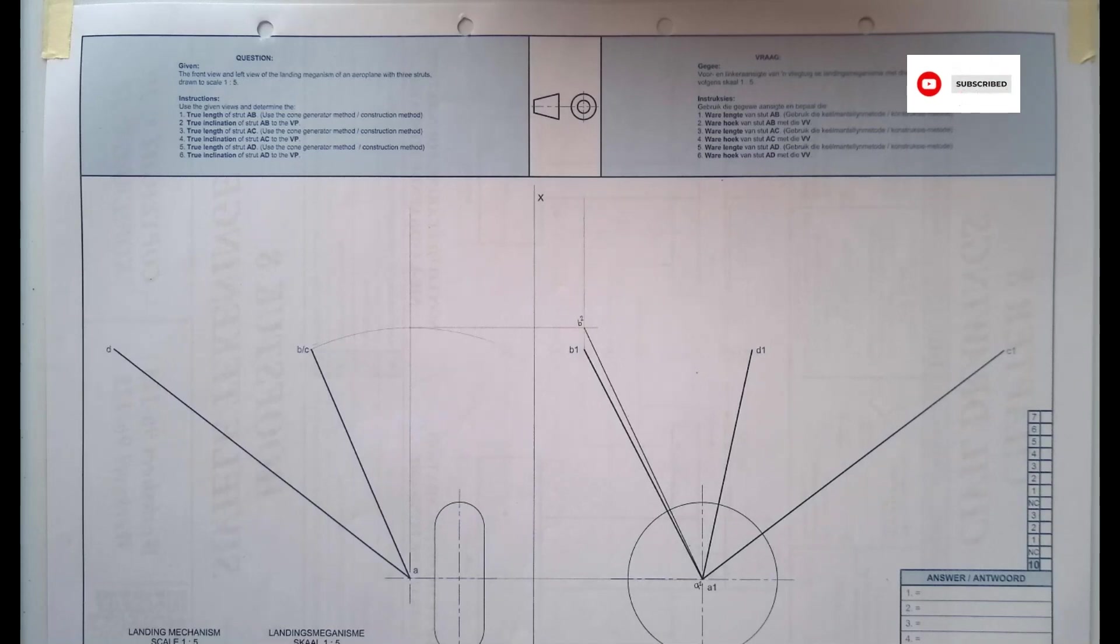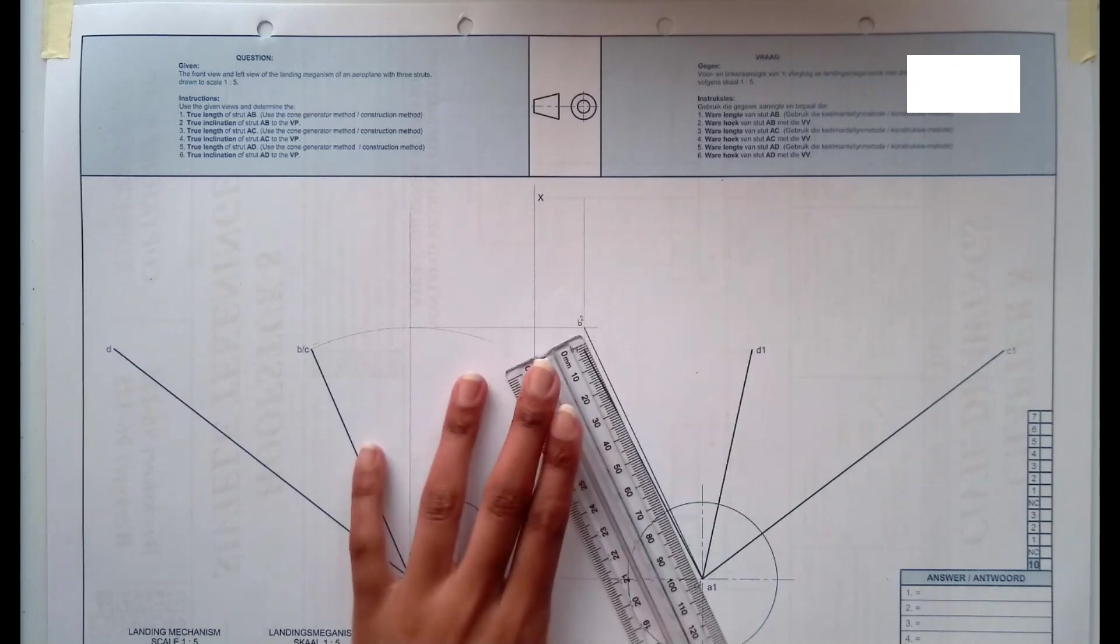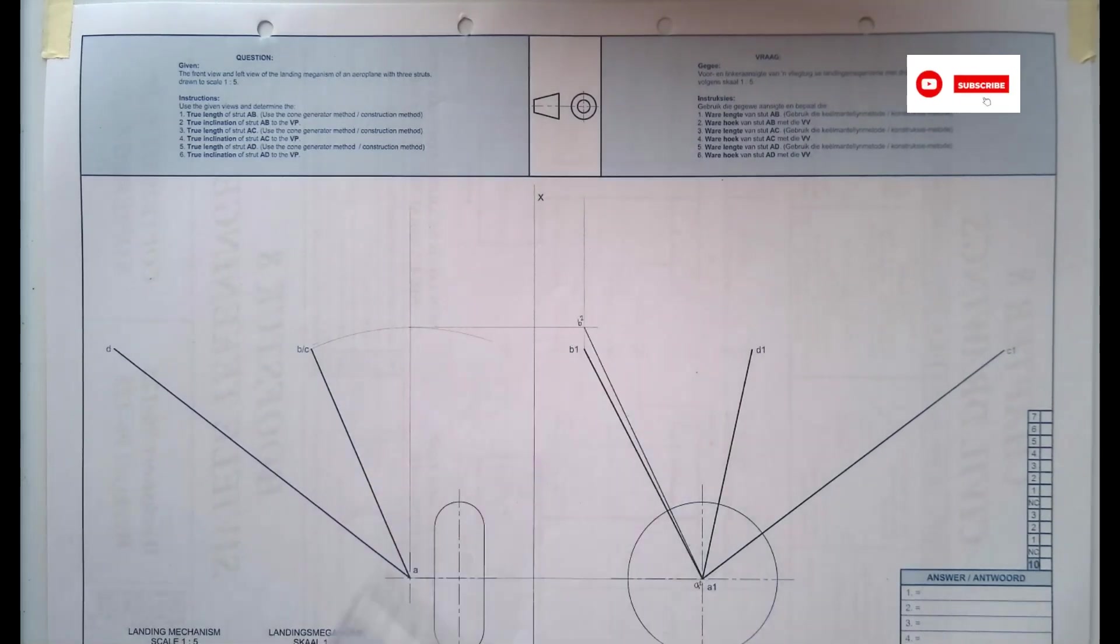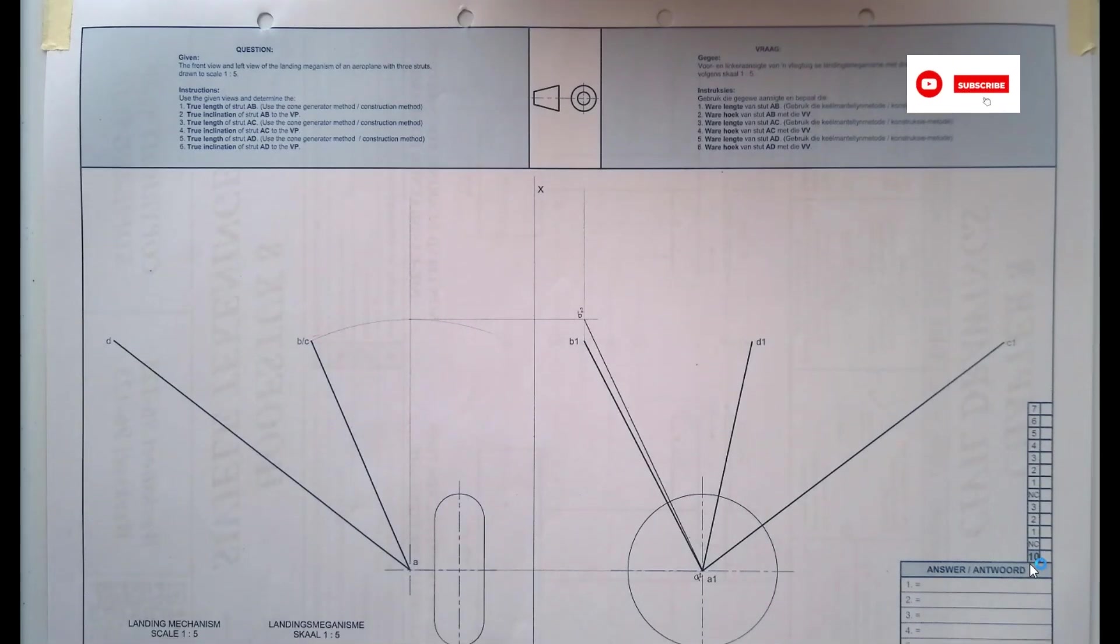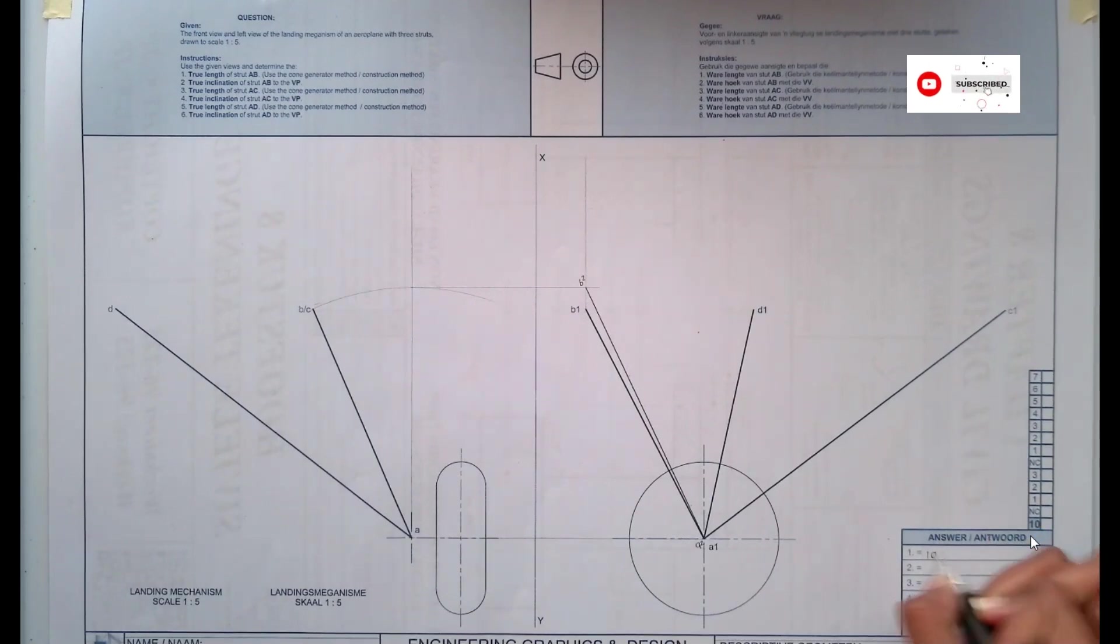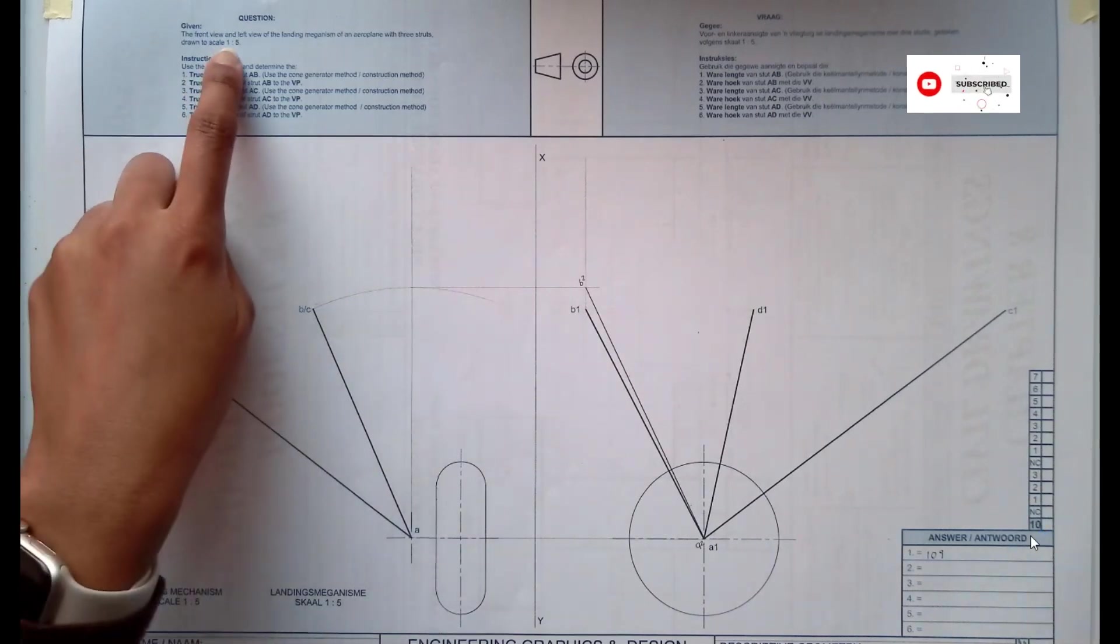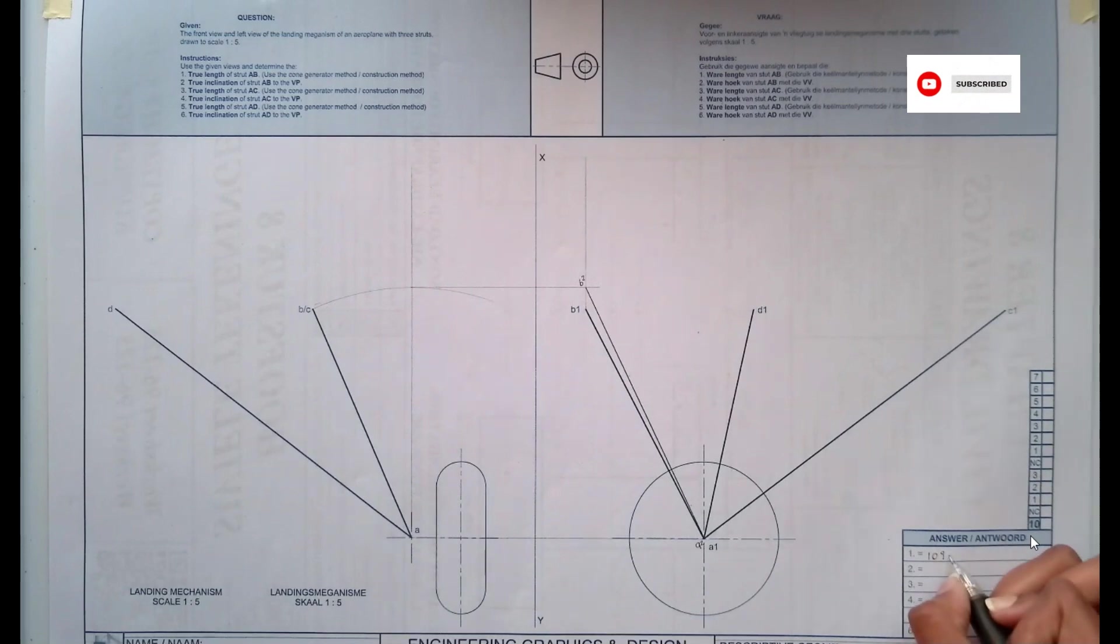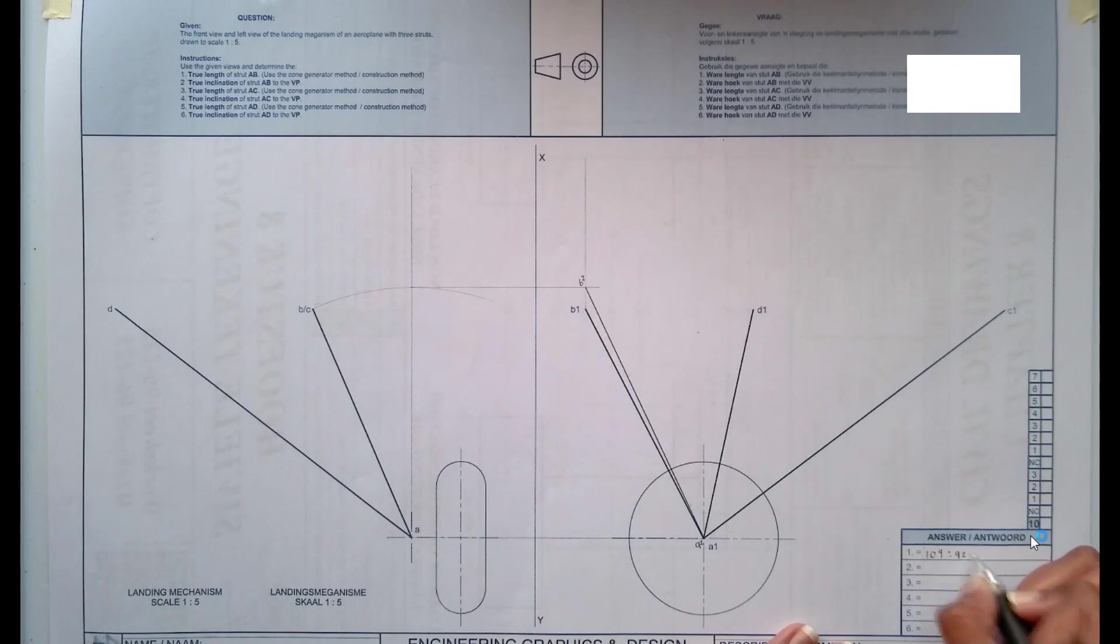Once the true length is there, all you need to do is take your ruler and measure B2 and A2. And I'm getting 109. But because they're using scale 1 is to 5, you're not done. That means you now need to multiply that 109. So you have to write A2 B2 equals to 109 multiplied by 5, which gives you 545.